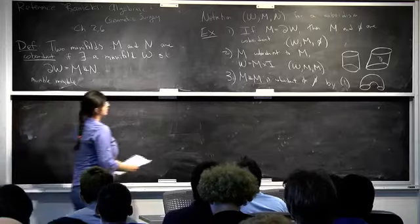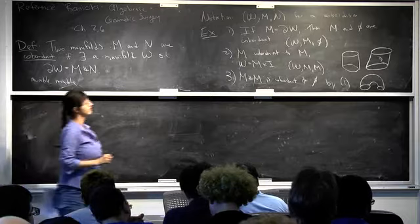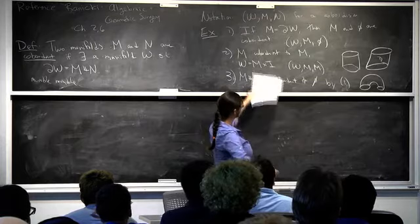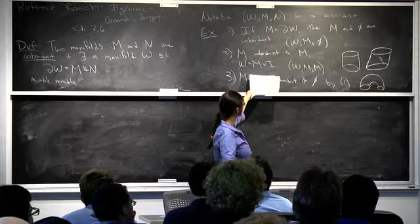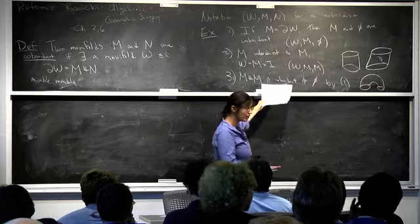This is worth advertising: as soon as you get to three dimensions it fails, but two works just fine. Cobordism is an equivalence relation, so M had better be cobordant to itself. Once you have orientation, M disjoint union M with the opposite orientation is cobordant to the empty set by this picture. But M plus M is not cobordant to the empty set.